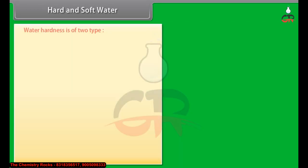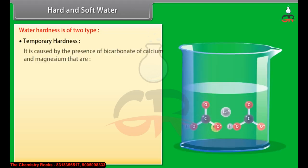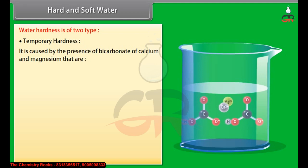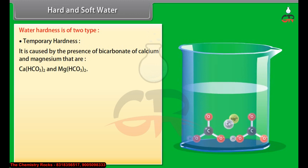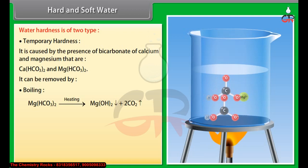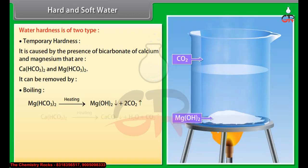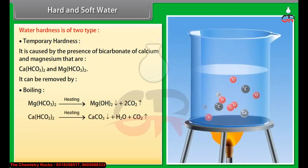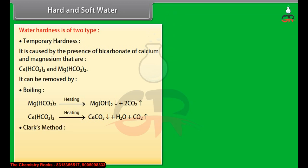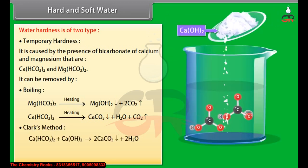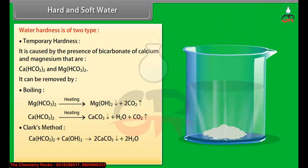Water hardness is of two types. Temporary hardness is caused by the presence of bicarbonate of calcium and magnesium, Ca(HCO3)2 and Mg(HCO3)2. It can be removed by boiling - soluble bicarbonates change to carbonates which are insoluble and get precipitated. Clark's method: when calculated quantity of lime is put in, it causes precipitation of calcium carbonate.